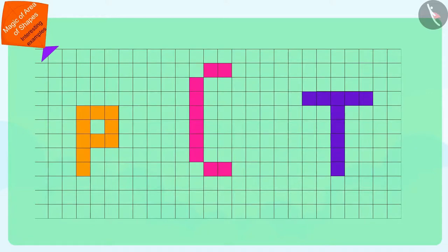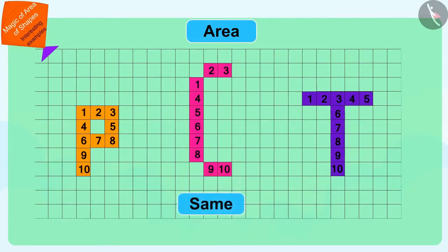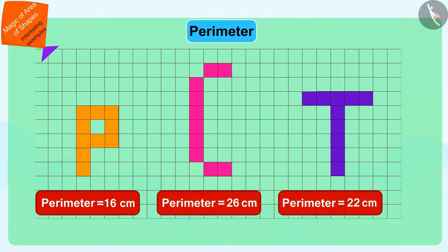Children, you have seen how the areas of the letters of Pinky, Chanda and Tufan are the same. However, their perimeters are different. It is quite possible that the shapes having the same area may vary in perimeter.